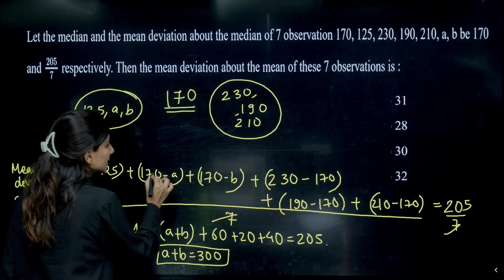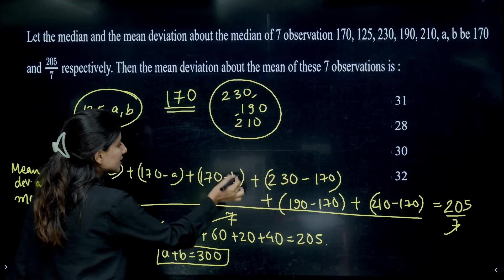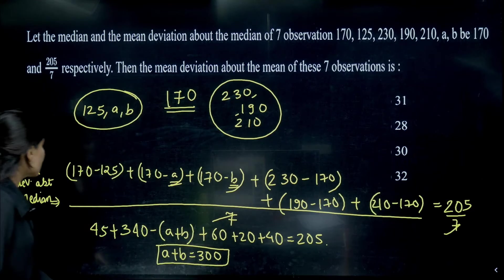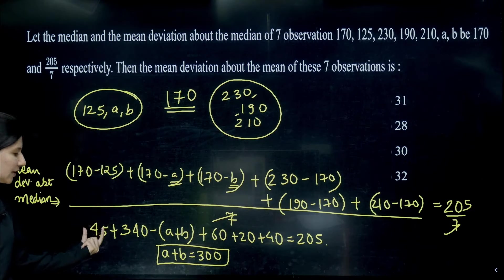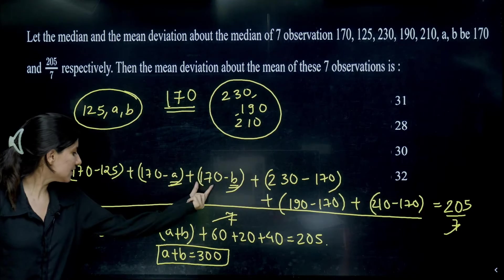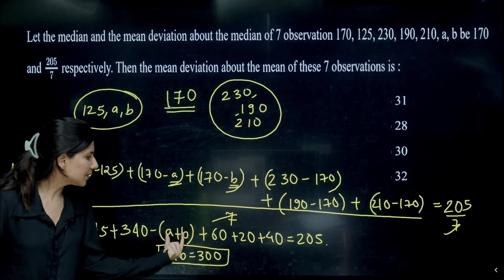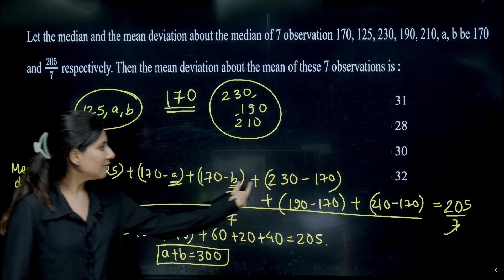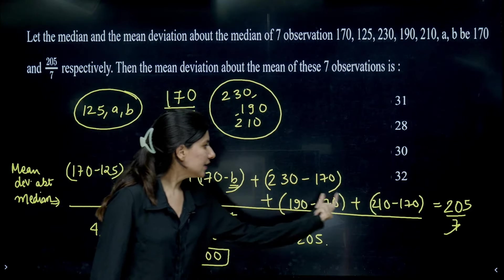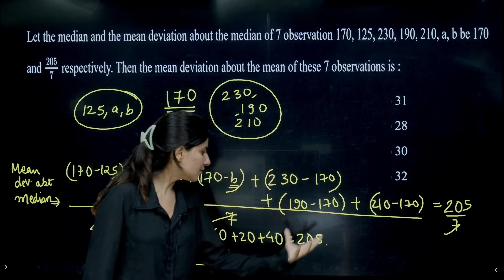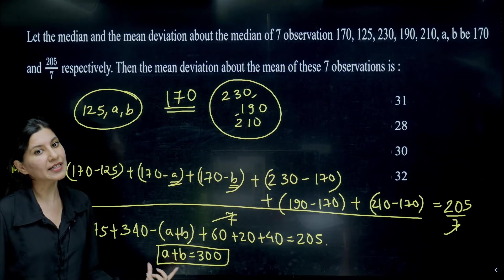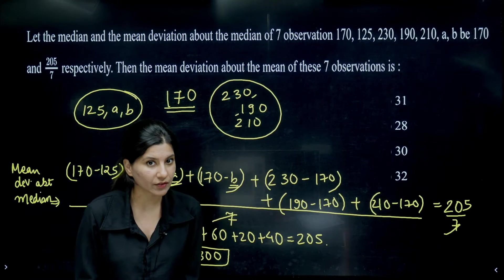Working it out: 170−125 = 45, then 340−(A+B) from the two missing terms, then 0 for 170, then 60 for 230, 20 for 190, and 40 for 210. Adding all these equals 205, which gives us A + B = 300.